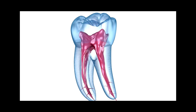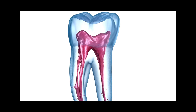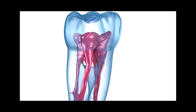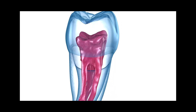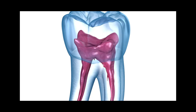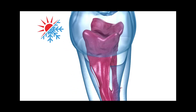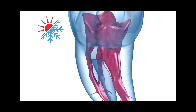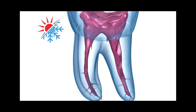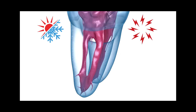The dental pulp is a soft tissue that is present inside the tooth and contains blood vessels, nerves, and lymphatics. As it is rich in nerve supply, this tissue is highly sensitive to various stimuli, including hot and cold.